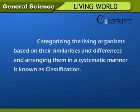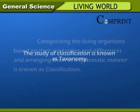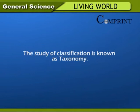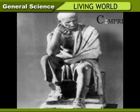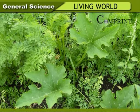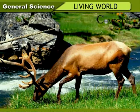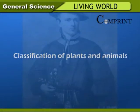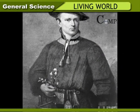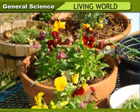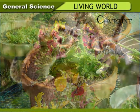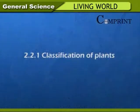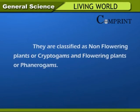Classification. Categorizing the living organisms based on their similarities and differences and arranging them in a systematic manner is known as classification. The study of classification is known as taxonomy. Aristotle was the first scientist who classified living organisms into two main kingdoms, namely plants and animals. Carolus Linnaeus, a biologist, classified plants on the basis of their reproductive organs. Animals were classified based on similarities and differences in their body structure. Plants are classified as non-flowering plants or cryptogames, and flowering plants or phanerogames.